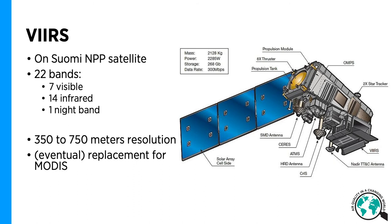It has a resolution between 350 and 750 meters, also dependent on the band. The interesting thing is that VIIRS was built as a replacement for MODIS. Originally MODIS was designed with a lifetime of six years — it was launched in 1999 and 2002 — and so MODIS has been alive for 20 years, and it's still actively collecting data and being used by scientists worldwide.